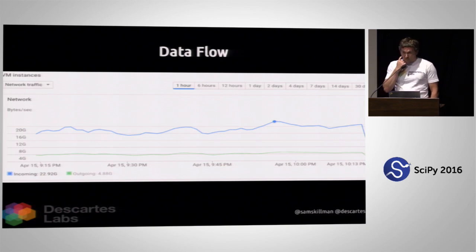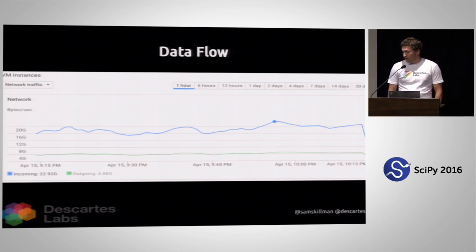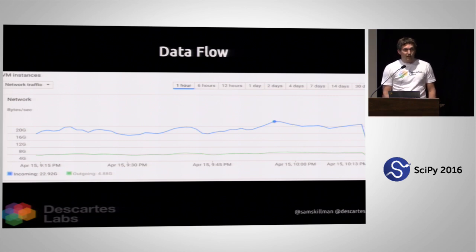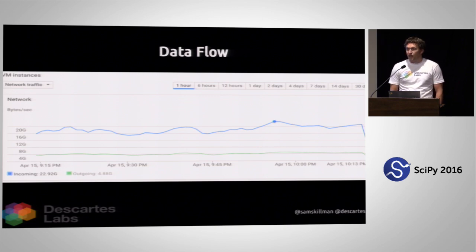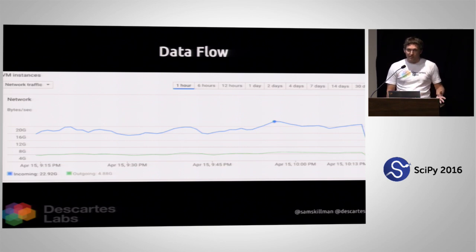One crazy number beyond just processing that amount of data was the network flow you can access through cloud compute. Our peak was 23 gigabytes per second of network bandwidth in and about 8 gigabytes per second out of compute. That's an incredible network bandwidth. I came from high-performance computing in the computational astrophysics world, and if you think about doing that in a traditional supercomputing center, you'd just start chuckling to yourself.